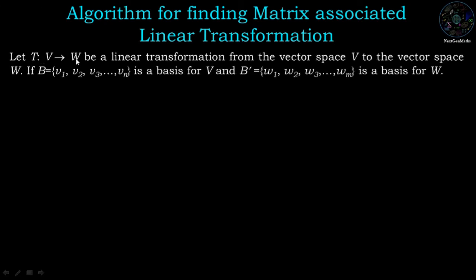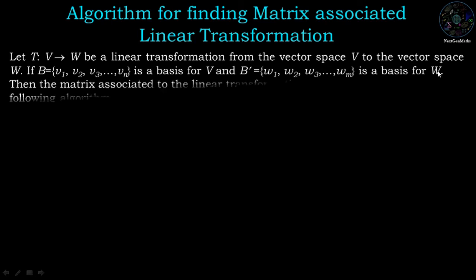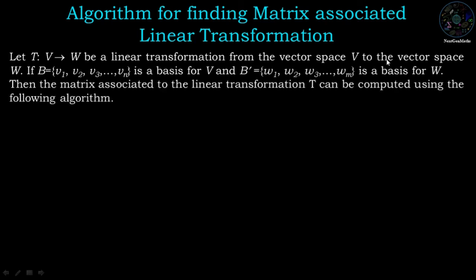Let T be a linear transformation from the vector space V to the vector space W. If B = {V1, V2, ..., Vn} is a basis for V, and B' = {W1, W2, ..., Wm} is a basis for the co-domain space W, then the matrix associated to linear transformation T can be computed using the following algorithm.